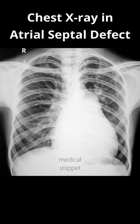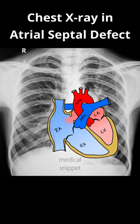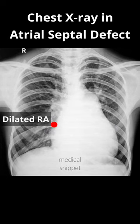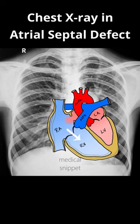In atrial septal defect, the blood is shunted from left atrium to the right atrium, so there is volume overload of the right atrium. The right atrium dilates, and from the right atrium the increased blood flow reaches the right ventricle, so with time the right ventricle also dilates.